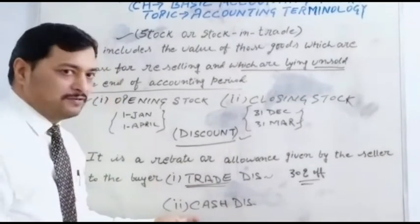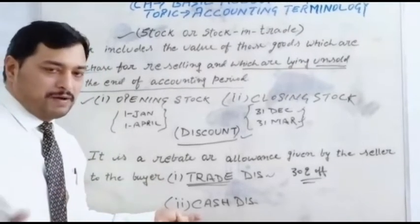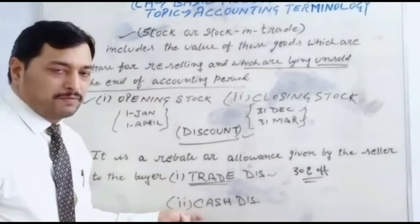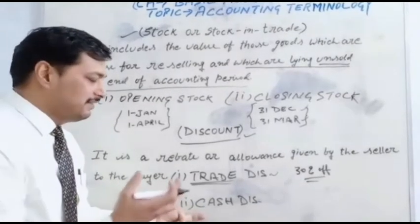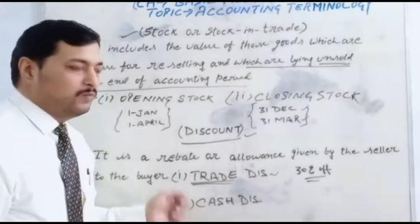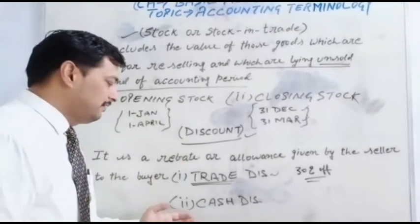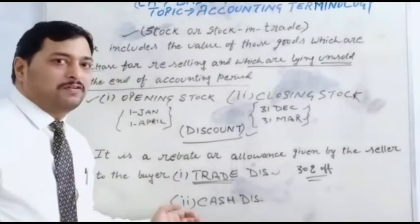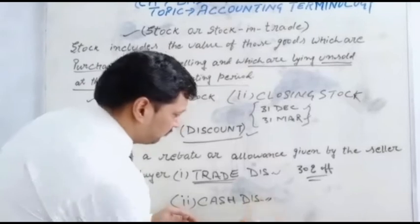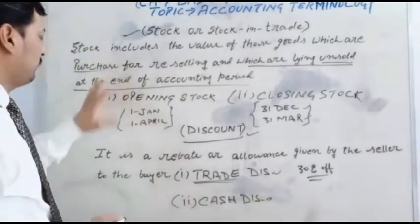Next is cash discount. Those discounts are given to the buyer to promote a payment, to receive a payment — it is called a cash discount. Or we can say, for arranging a sale, these discounts are approved by the shopkeeper or by the manufacturer to receive your payment — it is called a cash discount. I think both points are now clear.